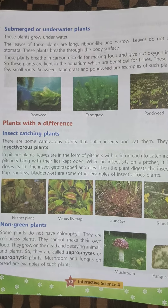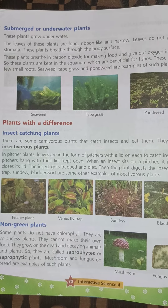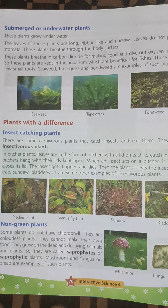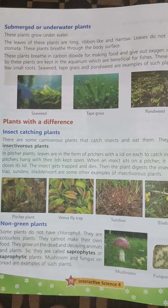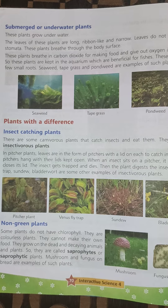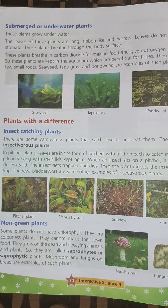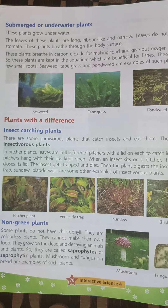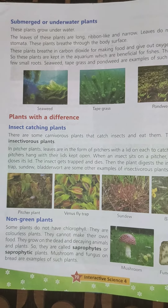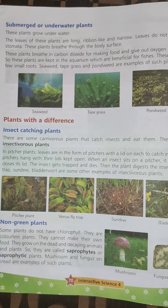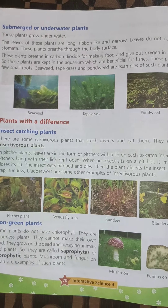Submerged or underwater plants: these plants grow underwater. The leaves of these plants are long, ribbon-like, and narrow. Leaves do not possess any stomata. These plants breathe through the body surface.